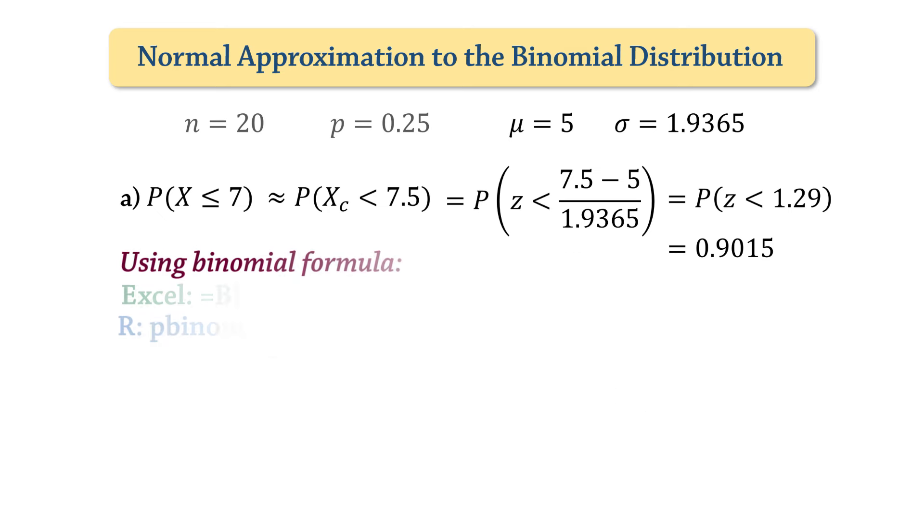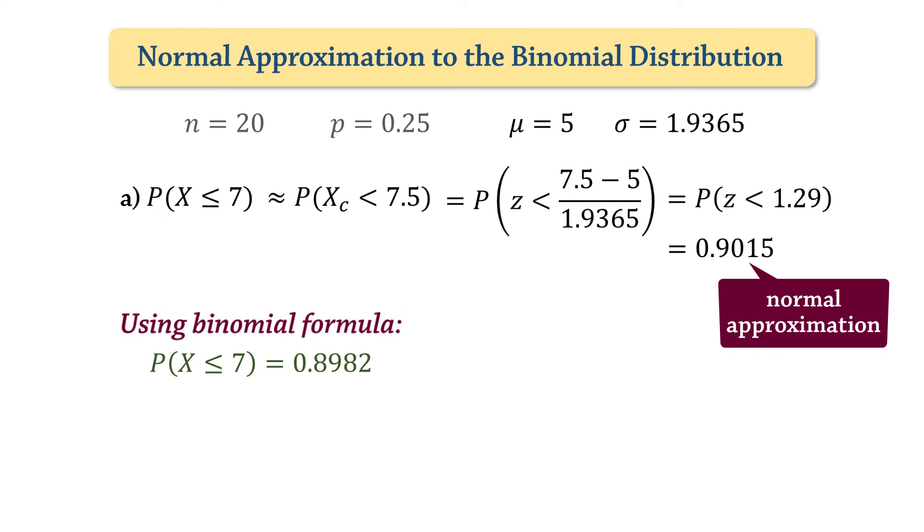Using the binomial formula or software, we find the precise probability of x less or equal to 7 to be 0.8982. We see that the normal approximation probability is quite close to the precise binomial distribution result. The approximation gets better with larger sample sizes.